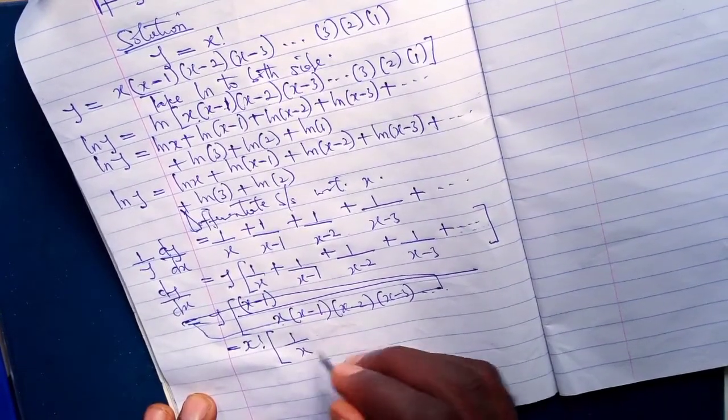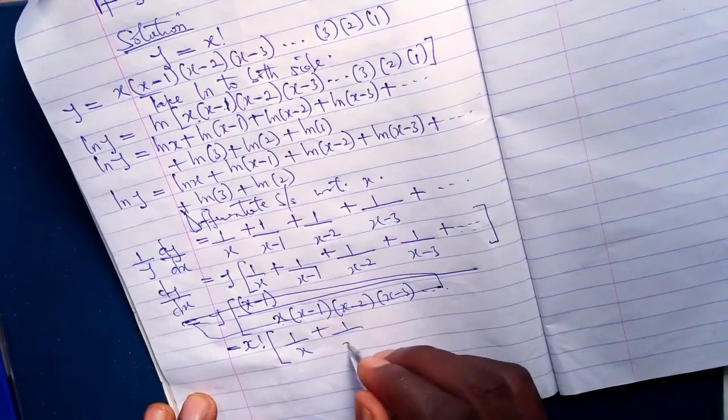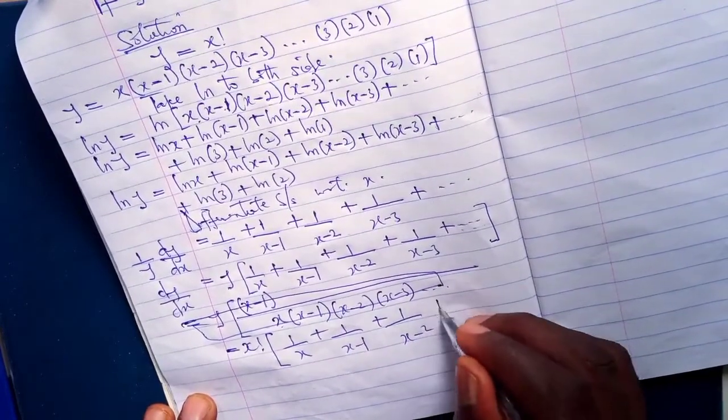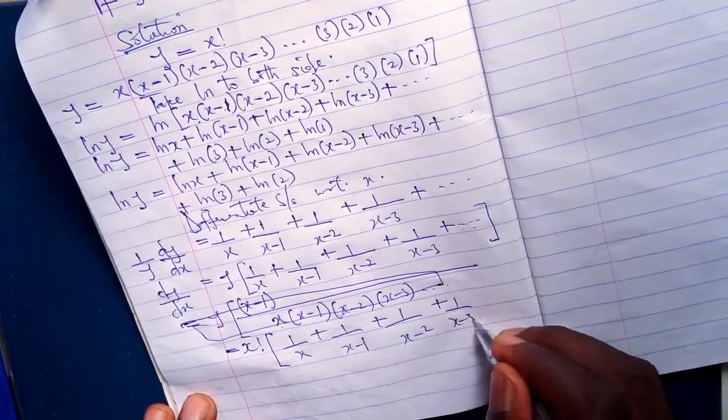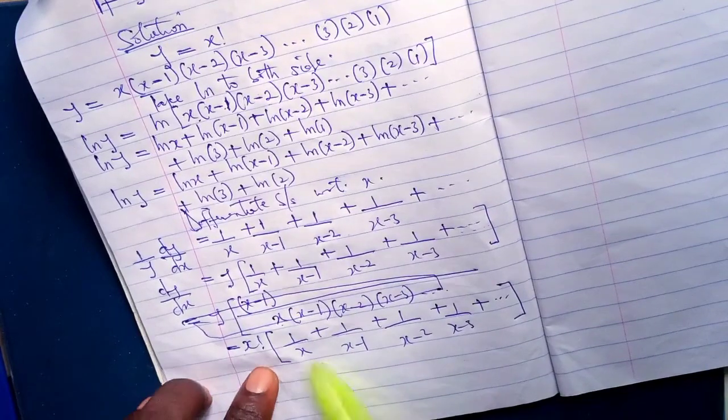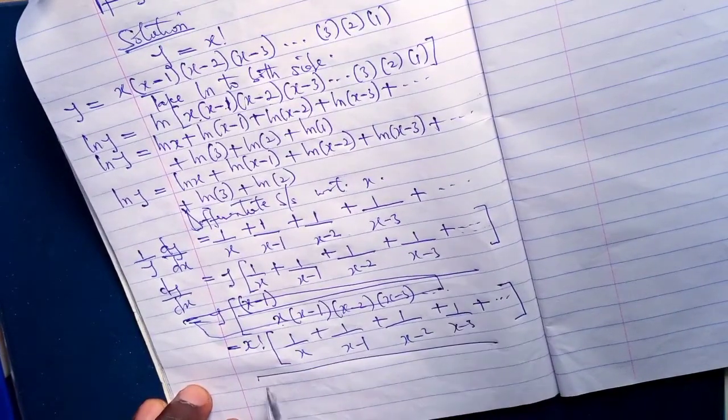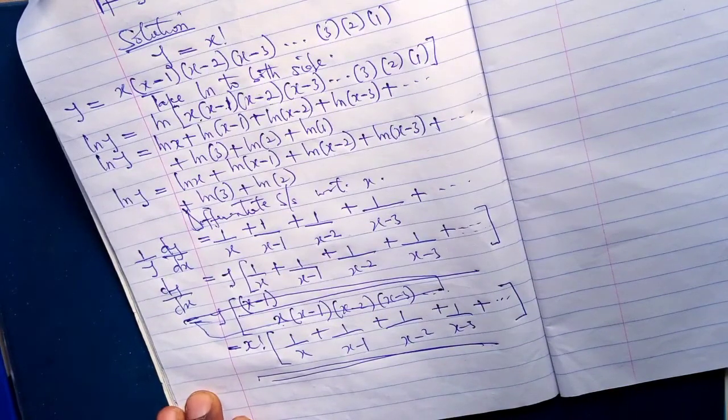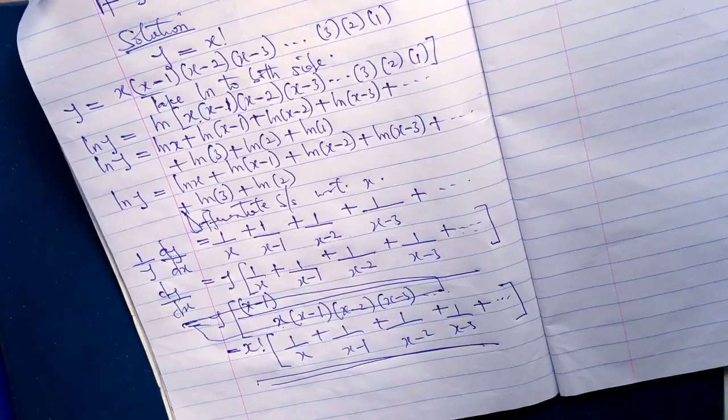x factorial into 1 over x plus 1 over x minus 1 plus 1 over x minus 2 plus 1 over x minus 3 plus dot dot dot. This is the derivative of x factorial. Thank you very much for watching.